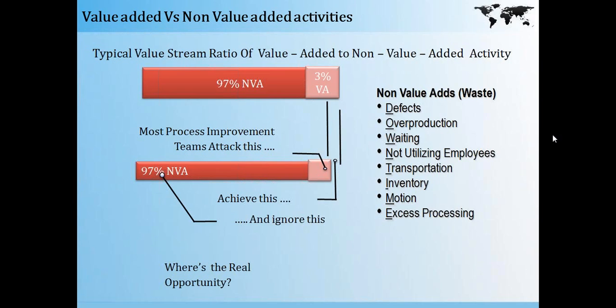If you are talking about value-added and non-value-added activities, industry research says that typically the value stream ratio — value-added to non-value-added activities — is 3% to 97%. That means that if there are 100 steps in a process, 97% would be non-value-adding and only 3% would be value-adding to the customer. Industry research also says that most process improvement teams attack the 3% of value-adding services trying to make the process more efficient, and ignore the other 97% of non-value-adding services.